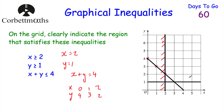Next inequality: y ≥ 1. We're looking for a region where the y-coordinate is greater than or equal to 1. Anything below the line y = 1 wouldn't work, so I'm going to mark below that line just gently to show that anything below that line would not satisfy that inequality. So far we know our region is going to be to the right of the x = 2 line and above the y = 1 line.